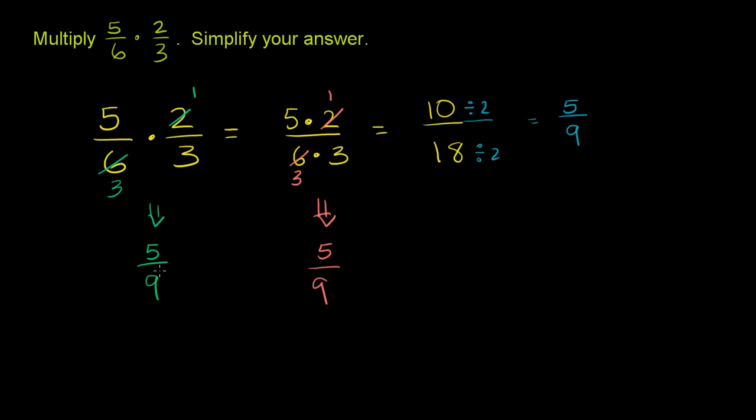So either way you do it, it'll work. If you do it this way, you get to see things factored out a little bit more, so it's usually easier to recognize what's divisible by what. Or you could do it at the end and put things in lowest terms.